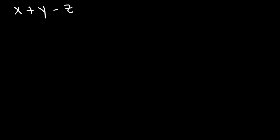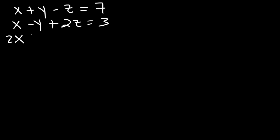In this lesson, we're going to use Gauss-Jordan elimination to solve a system of equations with three variables. Here's the problem: x plus y minus z is equal to 7, x minus y plus 2z is equal to 3, and 2x plus y plus z is equal to 9.